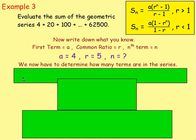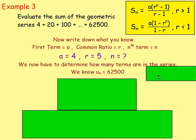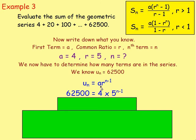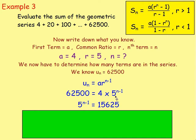We know that the last term, let's call it u_n, must equal 62,500. We can use our general term for a geometric sequence: u_n equals a times r to the power of n take away 1. So we can say 62,500 equals 4 times 5 to the power of n take away 1. Divide both sides by 4, and you're left with 5 to the power of n take away 1 equals 15,625.